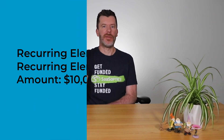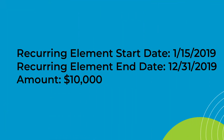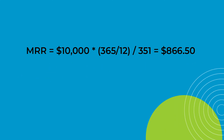Let's do a quick example. Say we have a customer who signed a contract beginning January 15th, 2019 and ending December 31st, 2019, and the recurring components of that contract equal $10,000. MRR for that customer would be 10,000 times 365, divided by 12, divided by 351 — that's the number of days between the term start date and the term end date plus one day — which comes to $866.50.